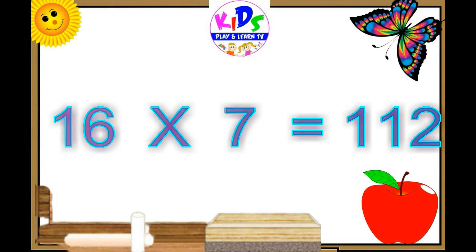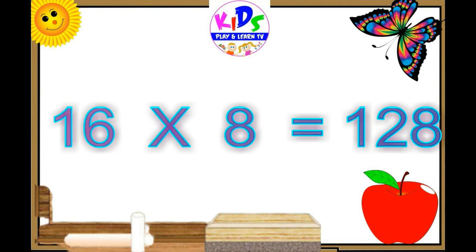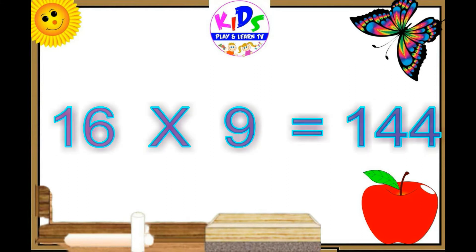Sixteen sevens are hundred and twelve, sixteen sevens are hundred and twelve. Sixteen eights are one twenty-eight, sixteen eights are one twenty-eight. Sixteen nines are 144, sixteen nines are 144.